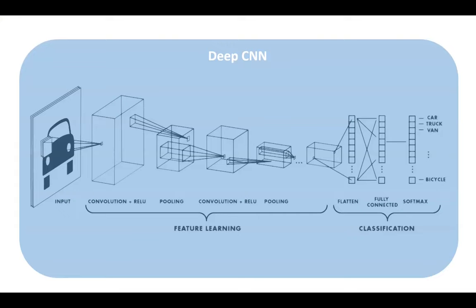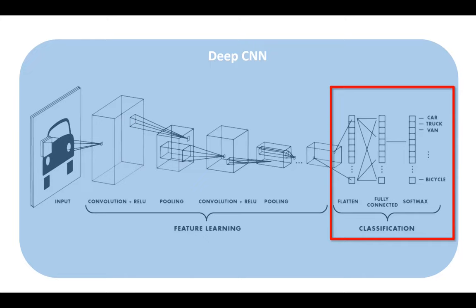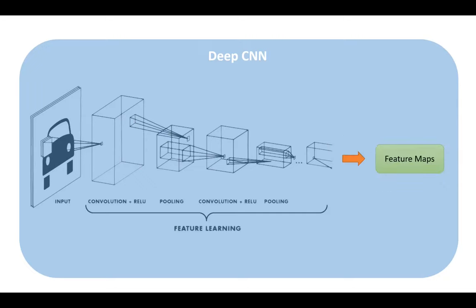I'm sure everyone here probably knows what a deep convolutional neural network is. Just as a short reminder: convolutional neural networks are deep neural networks that use at least one or more convolutional layers. Usually a CNN consists of a feature extraction network and a classifier network on top, and modern CNNs are trained end-to-end using backpropagation. A pre-trained headless CNN can be used as a pure feedforward feature extractor without the classification network, so that the output of the last layer can be used as complex feature maps for the given input image.